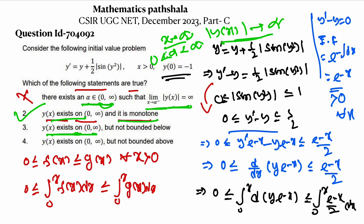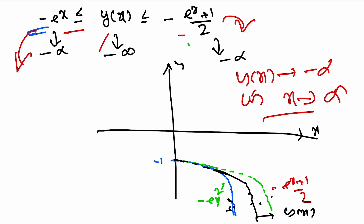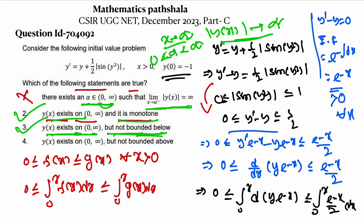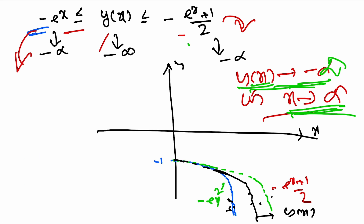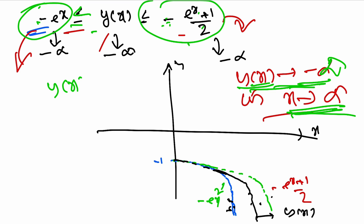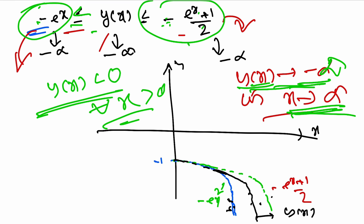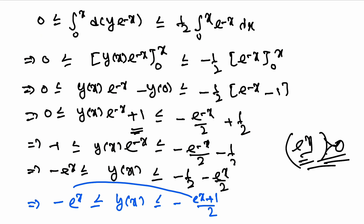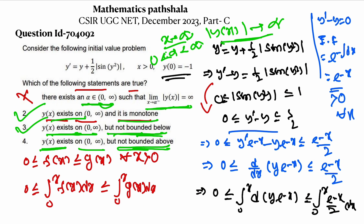Option 3 says y(x) exists on (0, ∞) but is not bounded below. Since y(x) → -∞ as x → ∞, it is indeed not bounded below, so option 3 is true. Option 4 says y(x) is not bounded above. However, y(x) is always negative since -e^x ≤ y(x) ≤ (-e^x + 1)/2 — both bounds are negative — so y(x) < 0 for all x > 0. Thus y(x) is bounded above by 0, and option 4 is false.